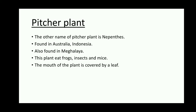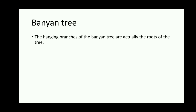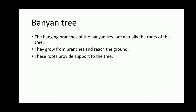The mouth of the plant is covered with a leaf. To attract insects and frogs, the plant releases some kind of smell. The next one is the Banyan tree. You might have observed the hanging branches of Banyan trees. These hanging branches are actually the roots of the tree — they start growing from the branches, reach the ground, and give support to the tree.